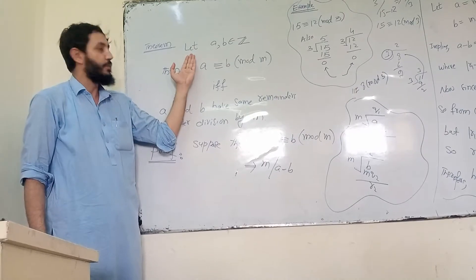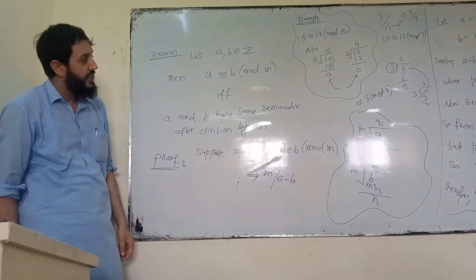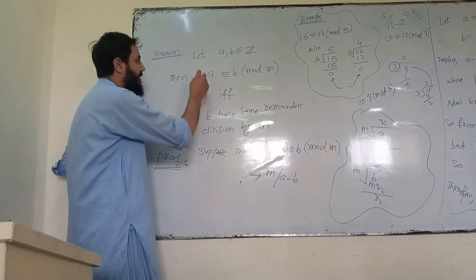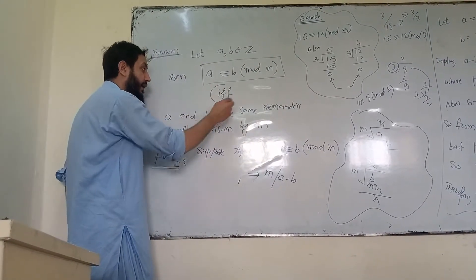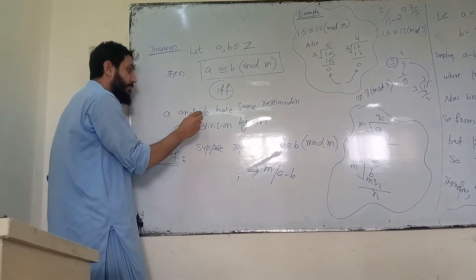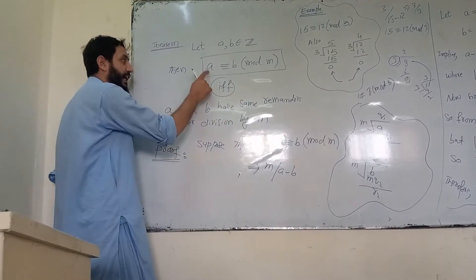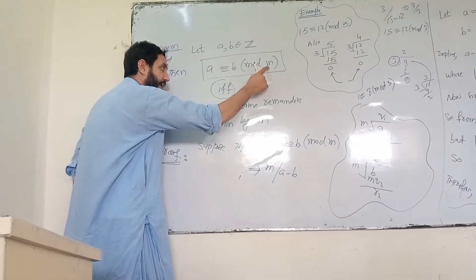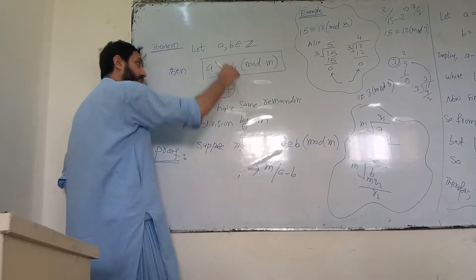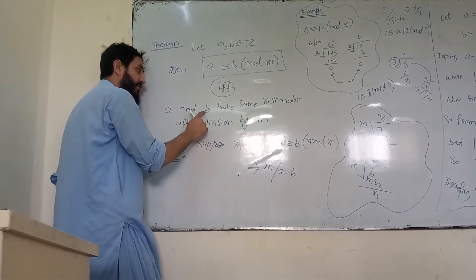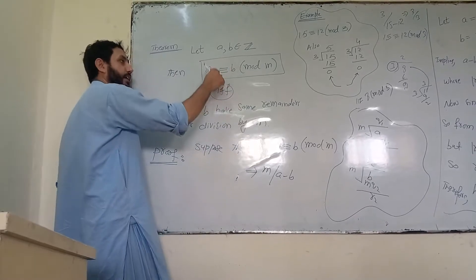So let A and B be two integers. The theorem states they will be congruent if and only if A and B have the same remainders after division by M. If they are congruent, they will have the same remainder after division by M. The converse is also true.